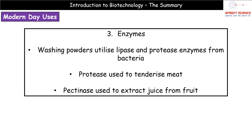The third category is enzymes. One example probably in your home is in your washing powder or liquid. We've identified that adding enzymes to washing liquid makes it better at removing stains. Specifically, we use bacterial lipase — which breaks down lipids — and protease — which breaks down proteins. We also use protease enzymes from bacteria to tenderize meat: a powder containing protease can be applied to meat to begin breaking down proteins in advance.